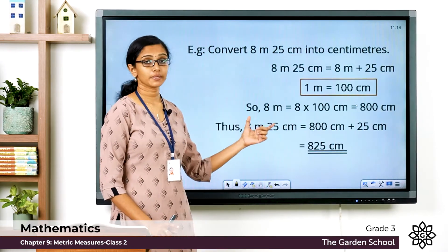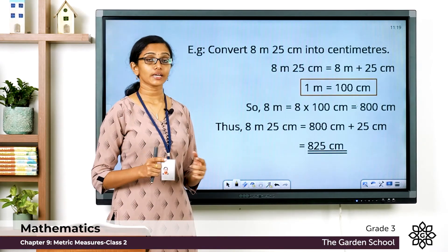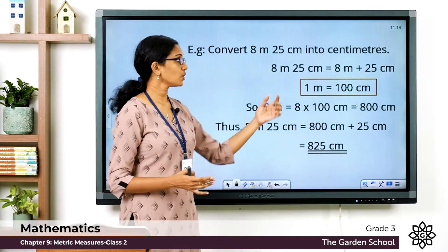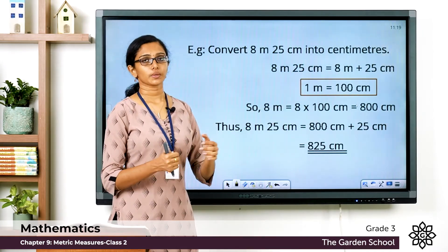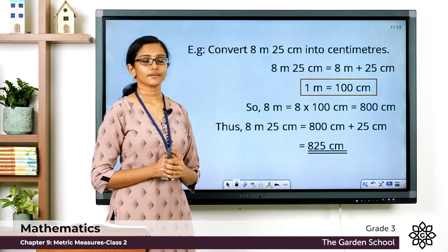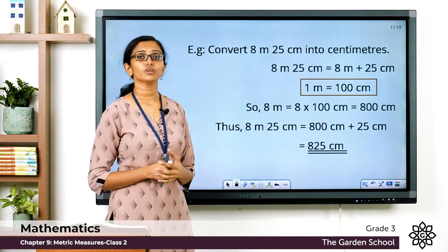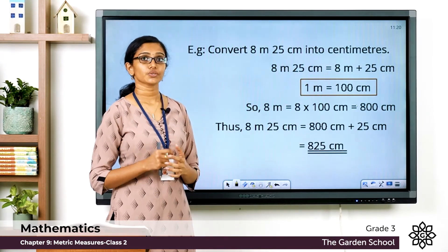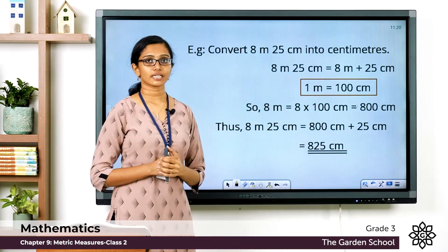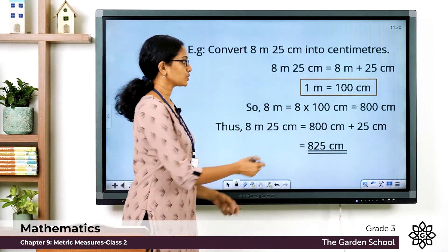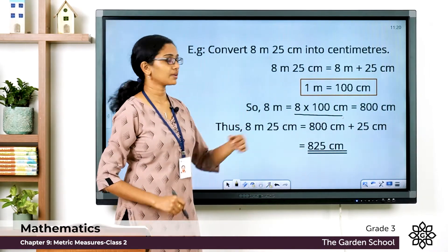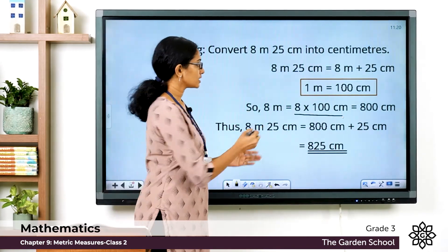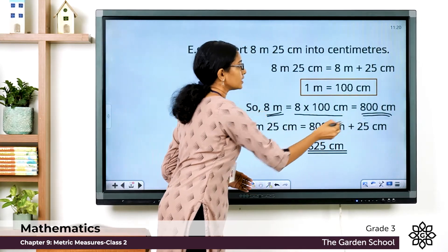We know 1 meter = 100 centimeters. The measurement given is 8 m 25 cm, which equals 8 meters plus 25 centimeters. What is 8 meters? Since 1 meter = 100 cm, 8 meters = 8 × 100 = 800 centimeters.